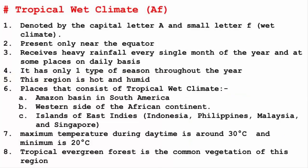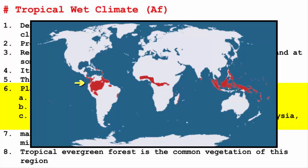On a world map, we will locate those places that have tropical wet climate. One is the Amazon basin in South America. Another is on the western side of the African continent. Another one is the islands of East Indies — don't confuse it with West Indies. East Indies are the lands of South and Southeast Asia, basically the islands in and around Indonesia, Philippines, Malaysia, and Singapore.